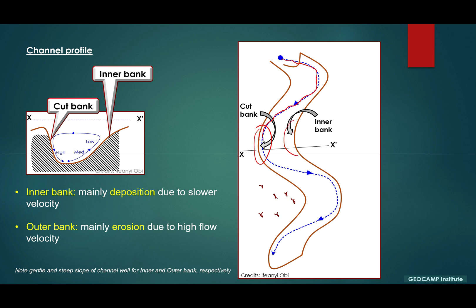And then in this area where you have the point bar building out, you're going to have a reduction in velocity. So everything around here is dominantly being deposited, but on this other side is constantly being eroded by the incident flowing system.